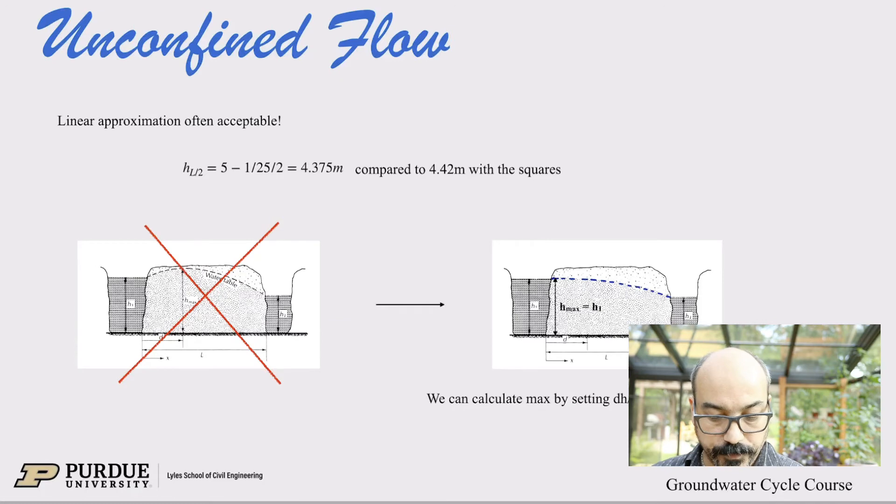Now a quick note here. If I use my linear approximation, so the confined aquifer results from last lecture, and I replace, so I'm looking at the head at the midpoint. So if it was linear, it would be just 5 minus half the difference between the two points, which if you look at what that is, that's 4.375 meters compared to 4.42, when we do the whole square business and derivation. So you notice that it's not a huge difference.